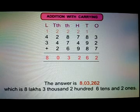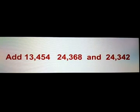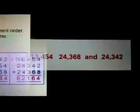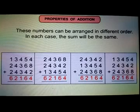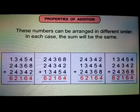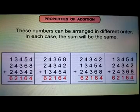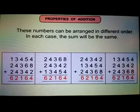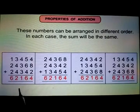Now let us understand properties of addition. For that, let's add three numbers given in this question. These numbers can be arranged in different order as given here. Just see: in the first column the answer is 6,22,000 and 1,164; in the second, third, and fourth columns the answer is the same. The orders are changed in each column but the answer is the same.